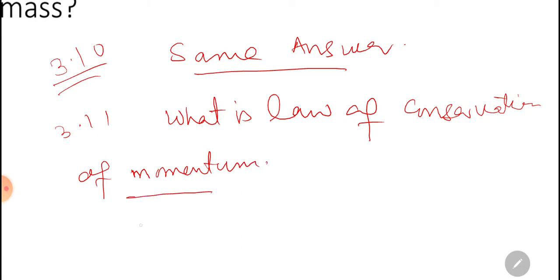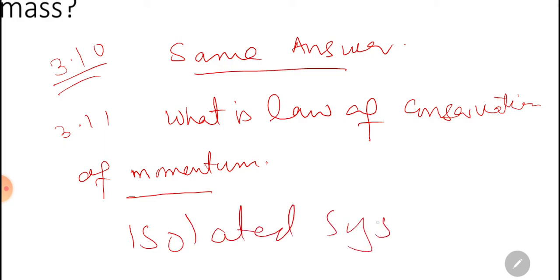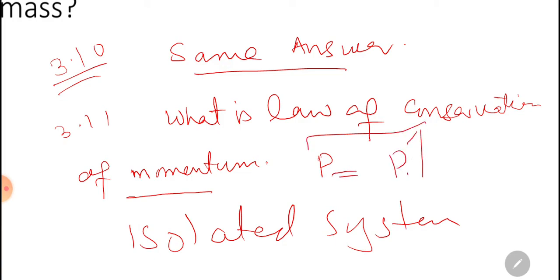The momentum of an isolated system always remains constant. Momentum before collision is equal to momentum after collision. Why the law of conservation of momentum is important — this is your home assignment, do it by yourself.